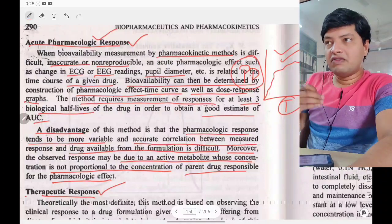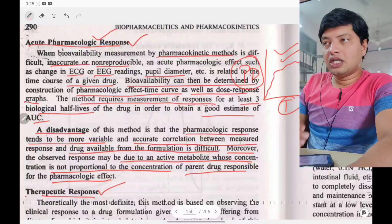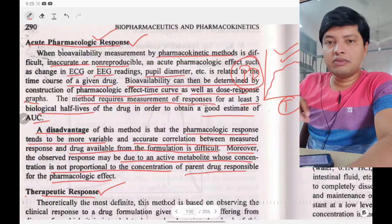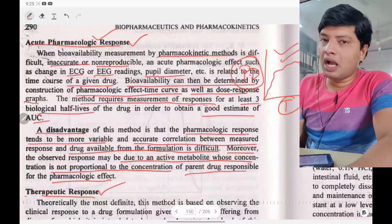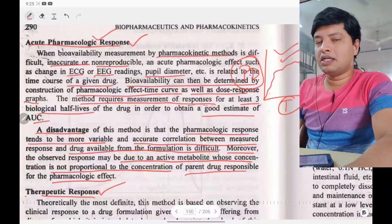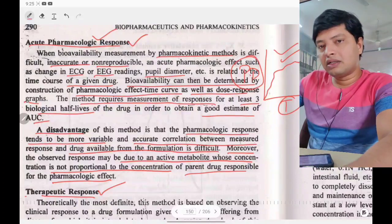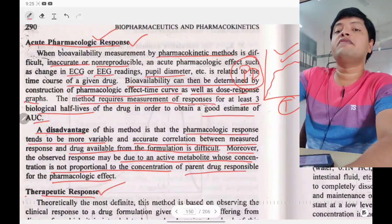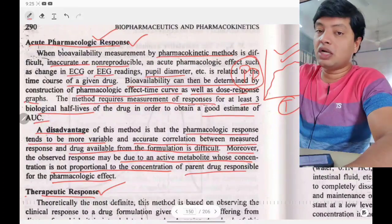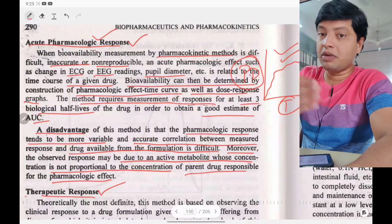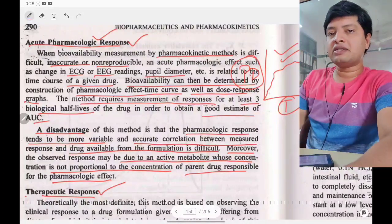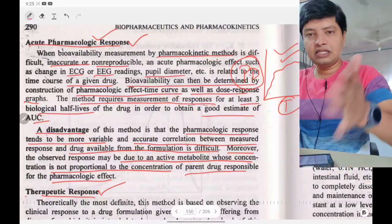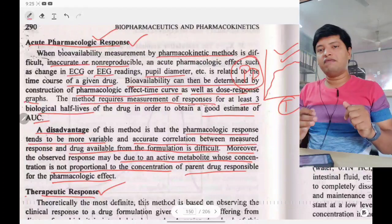You might assume a certain drug concentration produces a certain response, but the metabolite's concentration is different and it is producing the response. In such a case, that correlation between drug concentration and response becomes very difficult. This is the key disadvantage of the acute pharmacological response method.